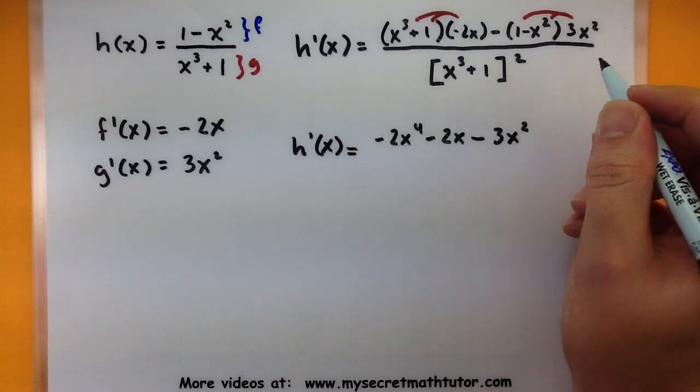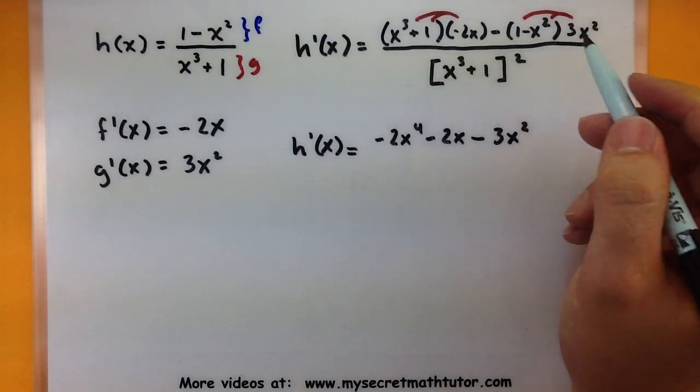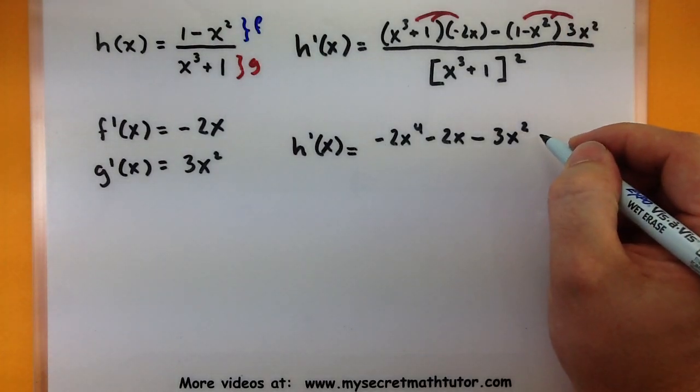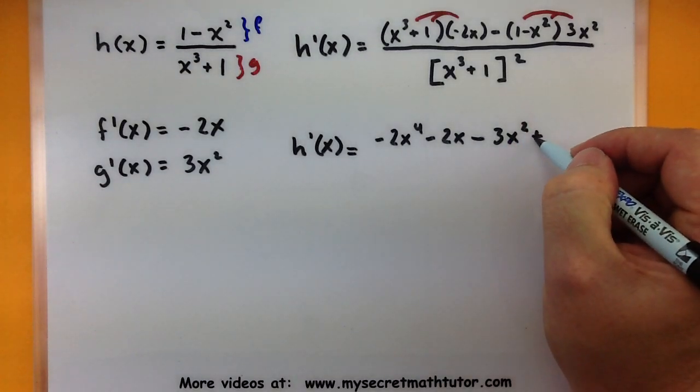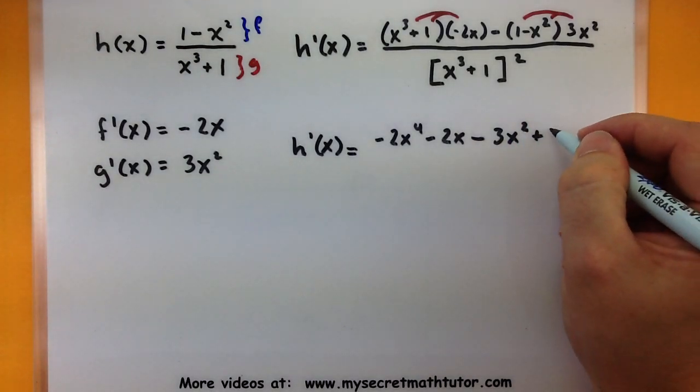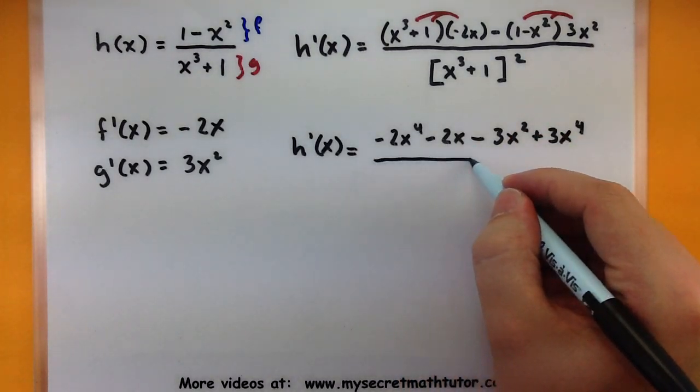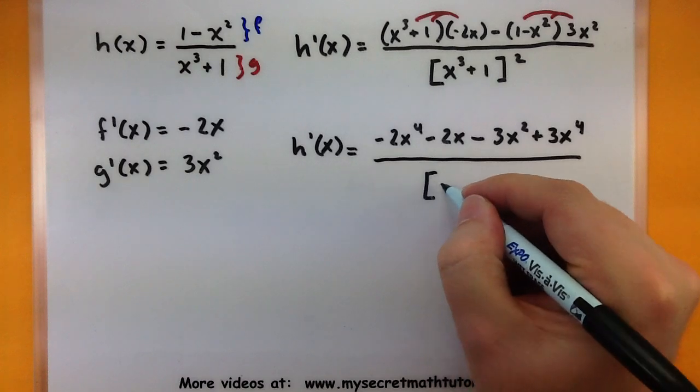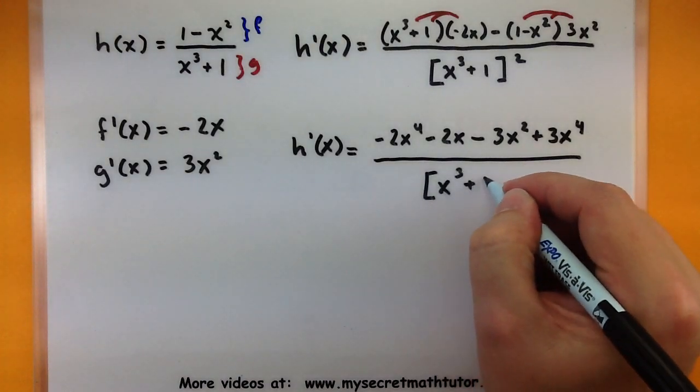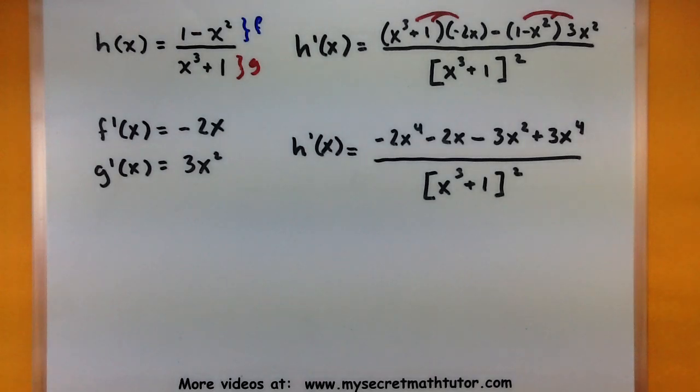So, 3x squared. 3x squared multiplied by here would be a negative 3x to the fourth. But, of course, we're subtracting. So, positive 3x to the fourth. All over x cubed plus 1. That whole thing is squared. Okay.